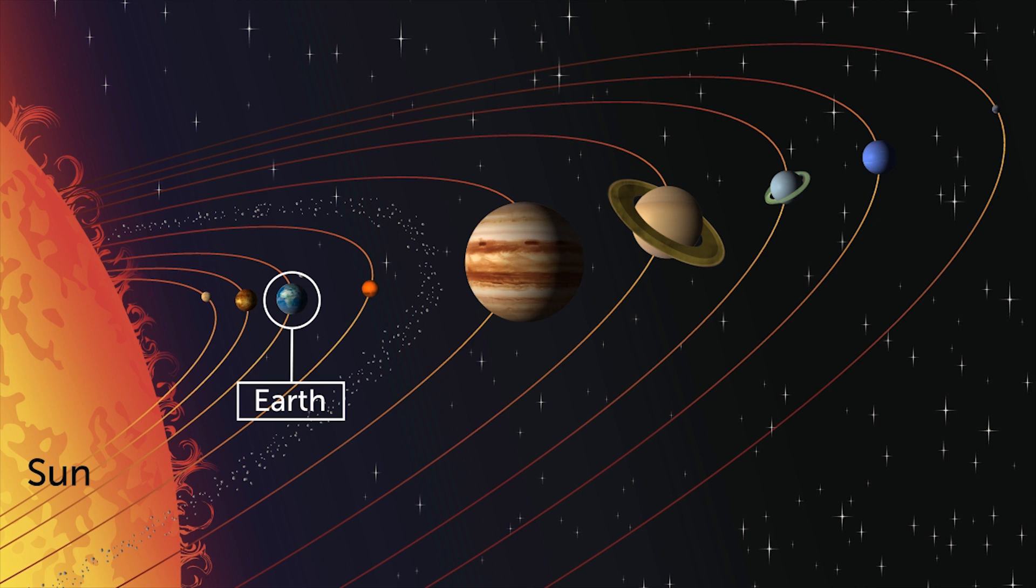The Earth is the third planet from the Sun. Scientists measure the distance of planets from the Sun in astronomical units. The Earth is one astronomical unit or AU for short from the Sun.